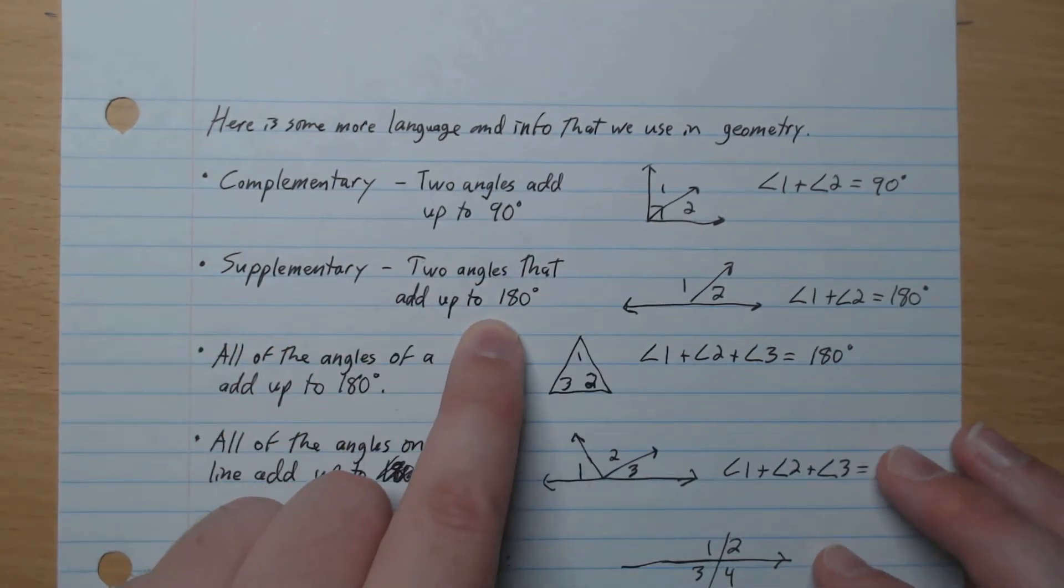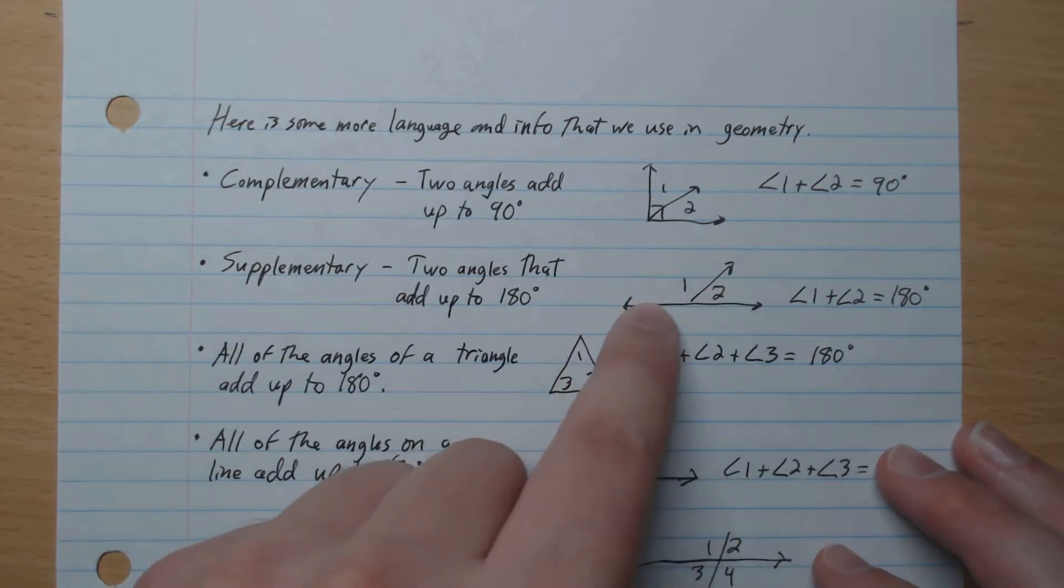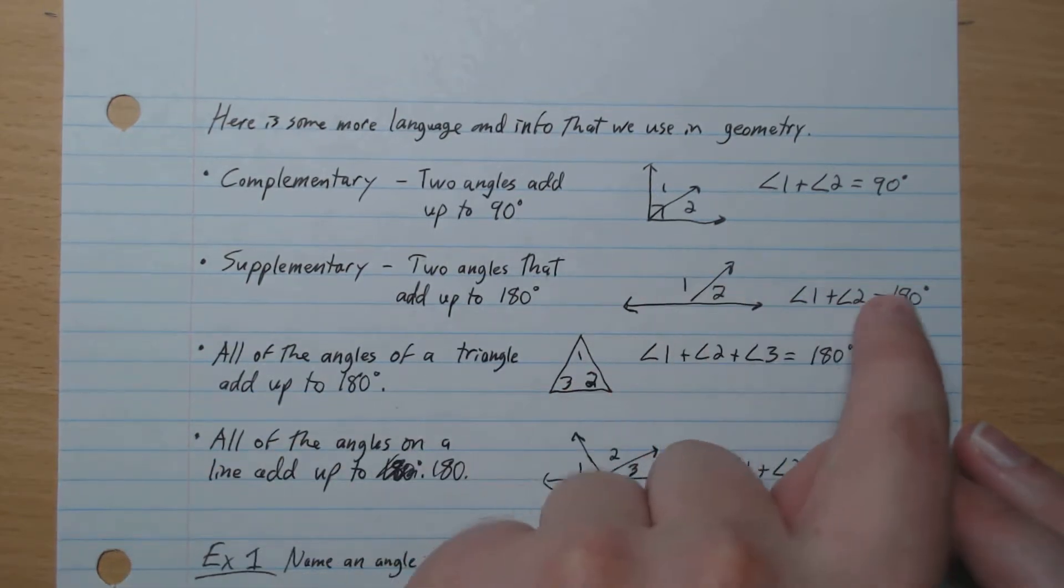Supplementary: 2 angles that add up to 180. So on a straight line here, angles add up to 180. So 1 and 2 add up.